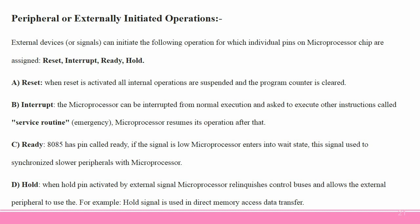Peripheral or externally initiated operations: External devices or signals can initiate the following operations. Reset: when reset is activated, all internal operations are suspended and the program counter is cleared. Interrupt: the microprocessor can be interrupted from normal execution and asked to execute other instructions called a service routine, then resumes its operation. Ready: if the ready signal is low, the microprocessor enters a wait state, used to synchronize slower peripherals with the microprocessor. Hold: when the hold pin is activated by an external signal, the microprocessor relinquishes control of buses and allows the external peripheral to use them.